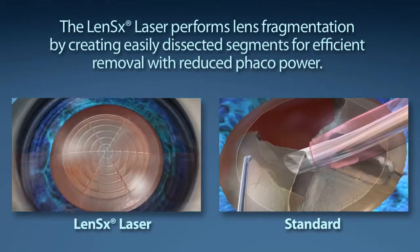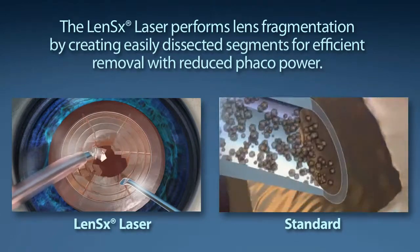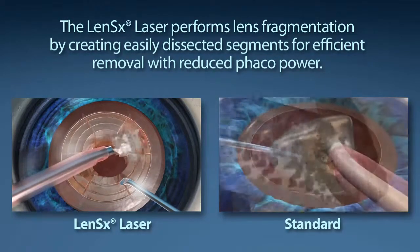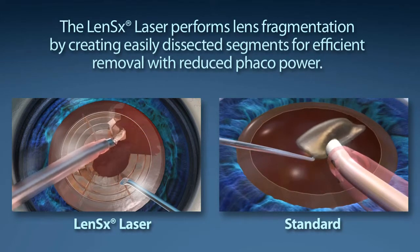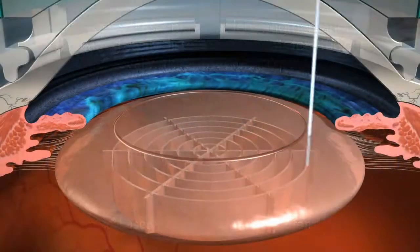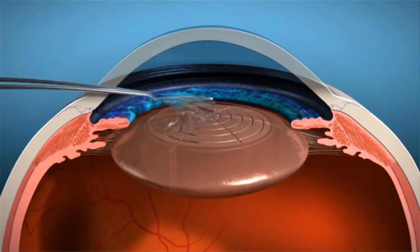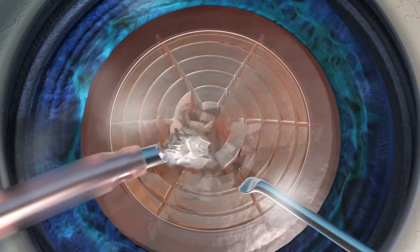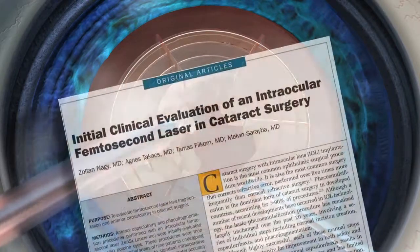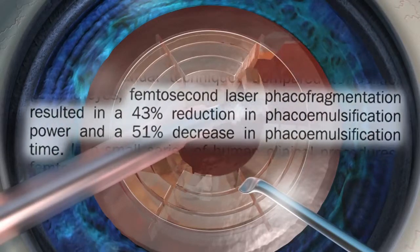Standard cataract surgery requires a phacoemulsification machine to segment and remove the content of the cataract. The goal of your surgeon is to reduce the amount of phaco energy used to remove your cataract. The LensX laser performs lens fragmentation, creating easily dissected segments for efficient removal with little or no phaco power. With the laser pulses utilized, the LensX laser provides the surgeon a 43% reduction in phaco power and 51% reduction in phaco time compared to the standard cataract procedure.